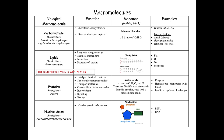Lipids function in long-term energy storage, chemical messaging, insulation, and protecting soft organs. Their monomers are fatty acids — saturated fatty acids have all single bonds between carbon atoms, while unsaturated fatty acids have a double bond. Examples of lipids include fats, oils, waxes, and hormones. Proteins are very important throughout the AP Bio course: they function in storage, signaling, body defense, muscle contraction, transport, structural support, and catalyzing reactions as enzymes.